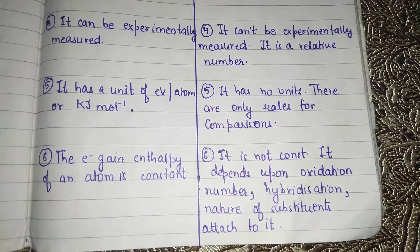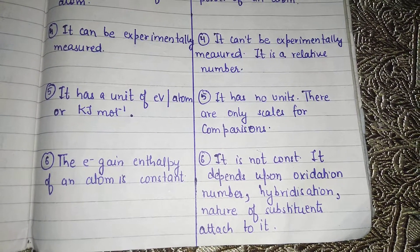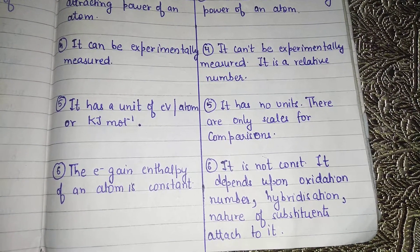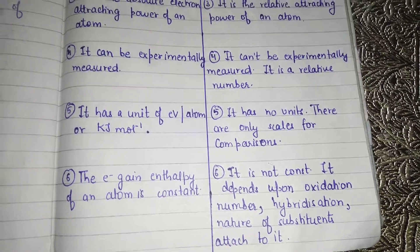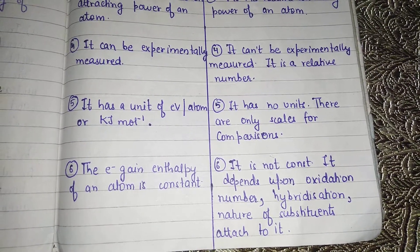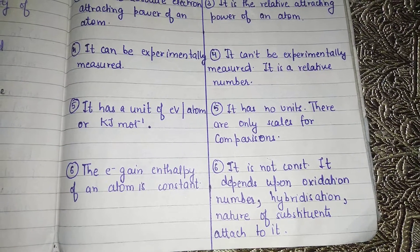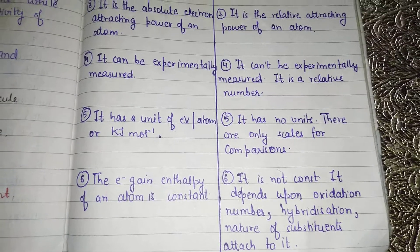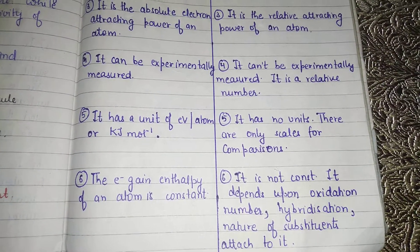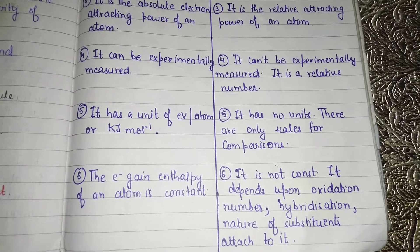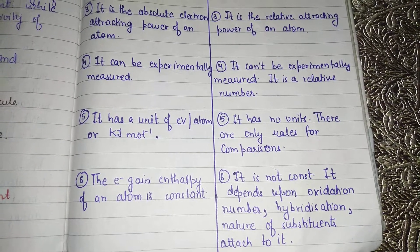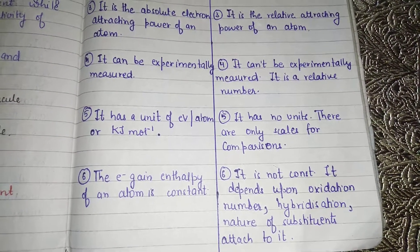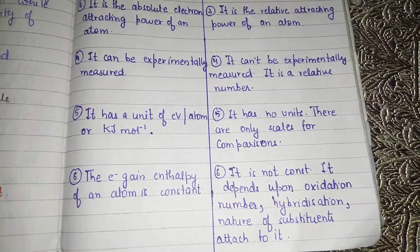The sixth difference is that the electron gain enthalpy of an atom is constant for a particular atom. In the case of electronegativity, it is not constant — it depends upon the oxidation number, hybridization, and the nature of the constituents attached to it, which we will study in the next video. This is how electronegativity changes for a single atom in different bonded states: one atom bonding with different elements may show different values. That is why electronegativity has no single perfect constant number, whereas electron gain enthalpy does.